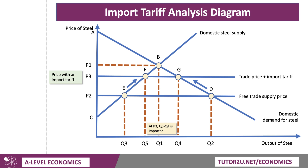Because they're now better able to compete with other steel producers due to the imposition of the tariff, the volume of imports falls from Q3–Q2 to Q5–Q4. So the tariff is doing its job in restricting imports and expanding domestic production.